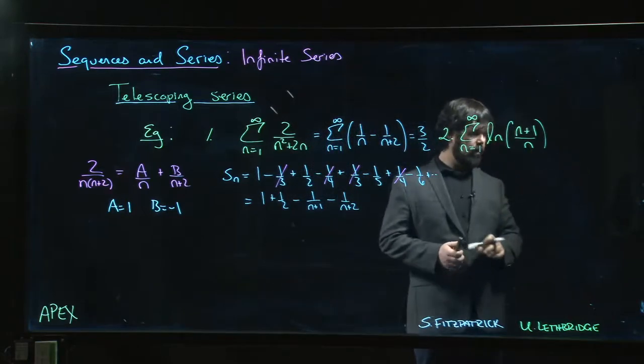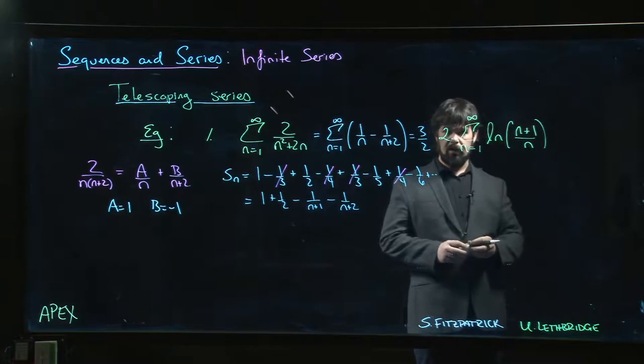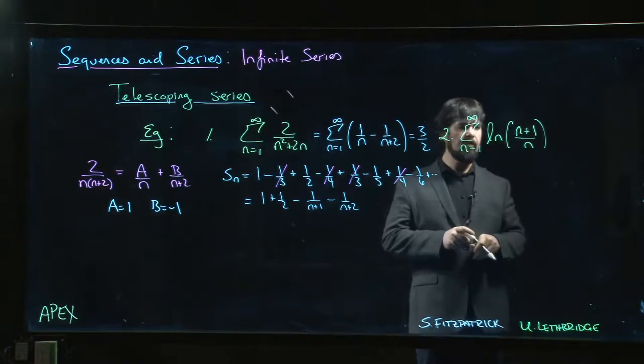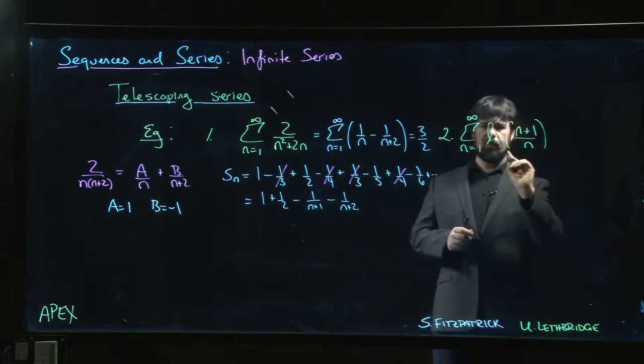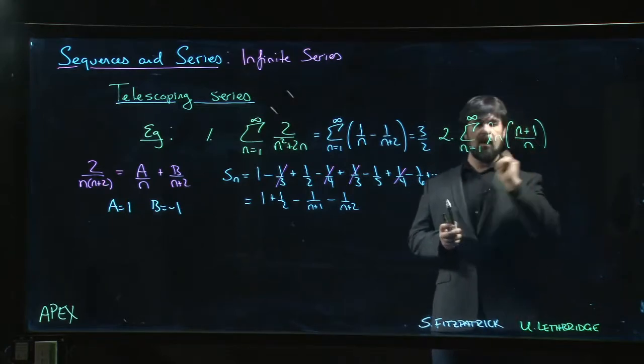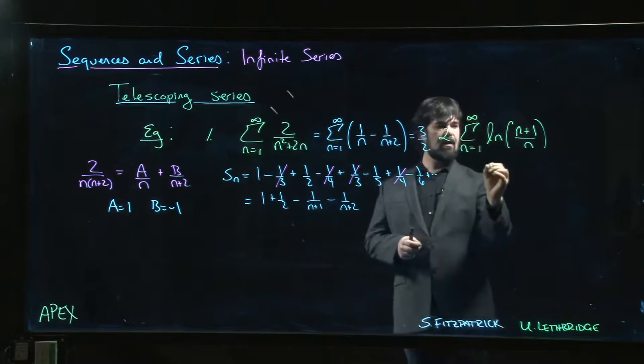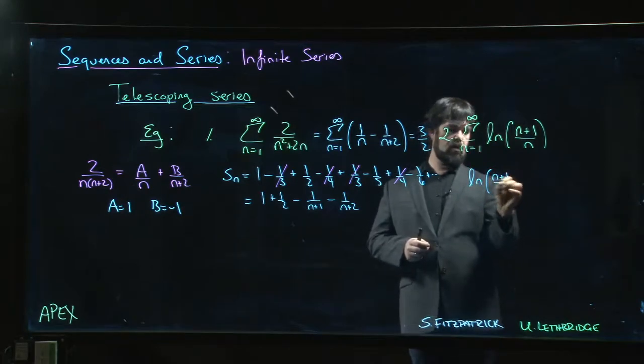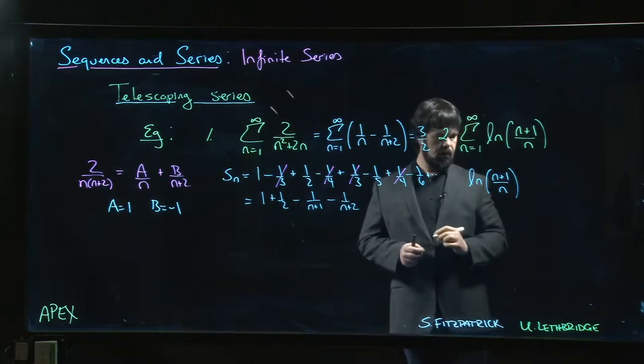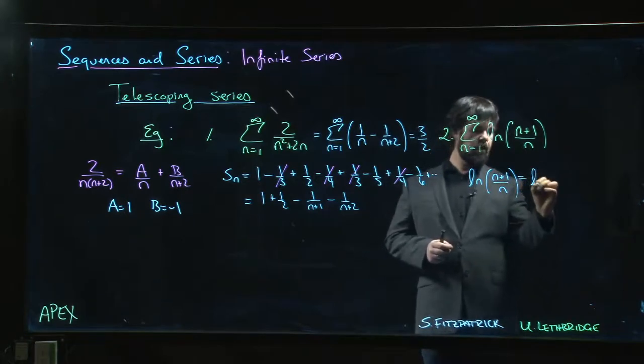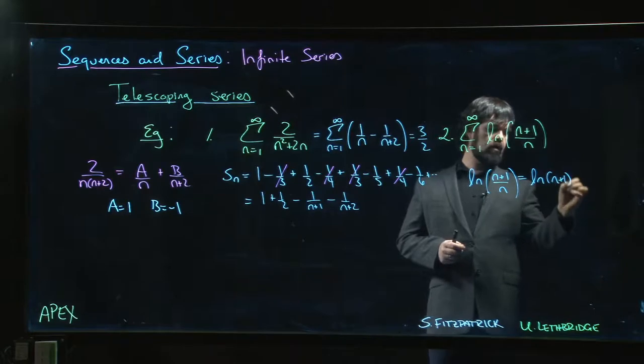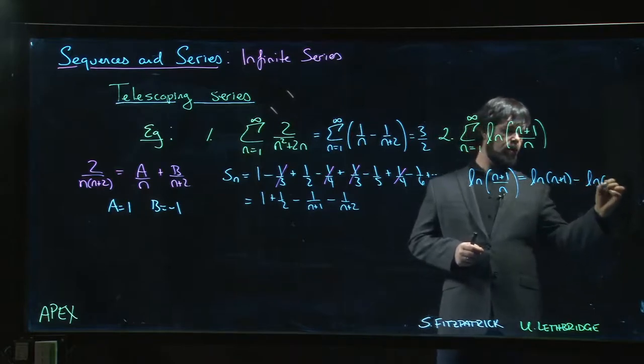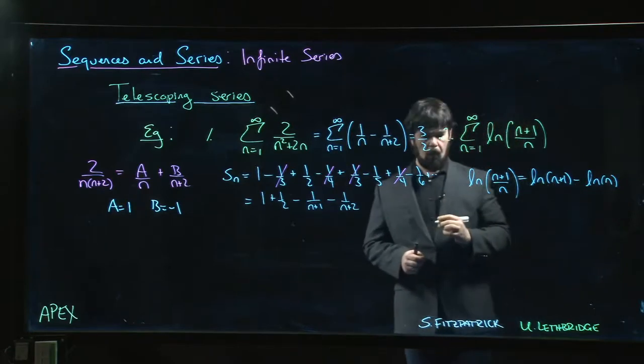Okay. Come to this last one. Well, that definitely doesn't look like a telescoping series, but maybe we can do something with it. Yes. Log properties. We know that log of n plus 1 over n is the same thing as log n plus 1 minus log n.